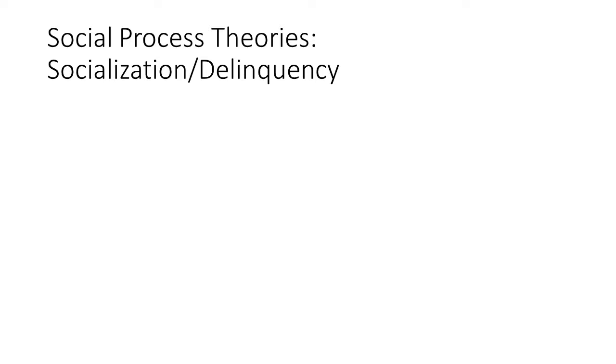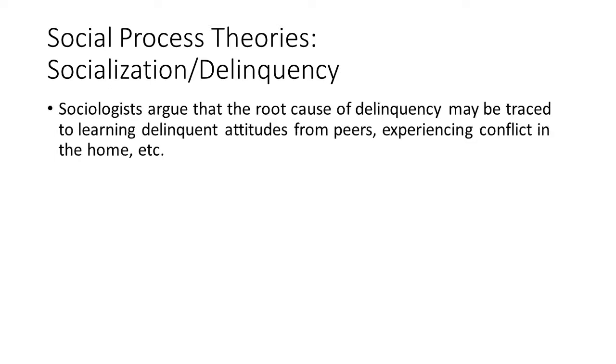Moving on to the next theory, the social process theories. Some sociologists believe that delinquency is not the result of living in an impoverished, deteriorated, low-class area, but rather the end product of various social processes, especially inappropriate socialization and social learning. This approach stresses the role of interpersonal relationships, the strength of social bonds, a lack of self-control, and the personal and group consequences of societal reactions to delinquency.